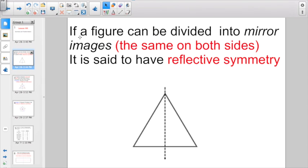So to start off with, if a figure can be divided into mirror images, the same on both sides, it's said to have reflective symmetry. This word symmetry means that it's going to be the same on both sides. Maybe you've heard the adjective form symmetrical. That just means whatever you have on one side would be exactly the same as it is on the other side.